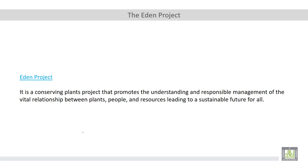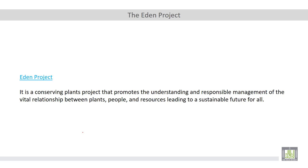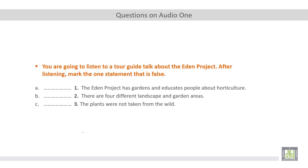Its objective is to create a balance between people, plants, and the resources in order to maintain our planet's prosperity. You are required to listen to a tour guide talk about the Eden Project. After listening, mark the one statement that is false. We have three sentences here, and one of these sentences is false while the others are true. Please listen to the tour guide and then try to answer these questions.